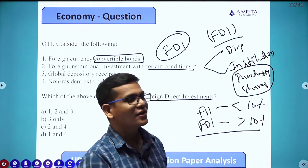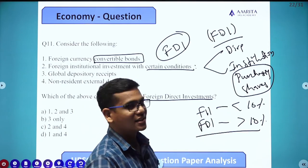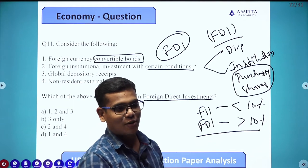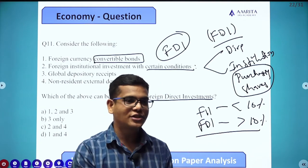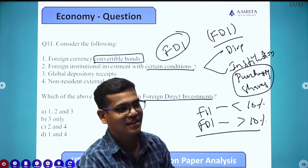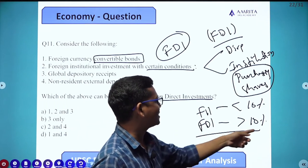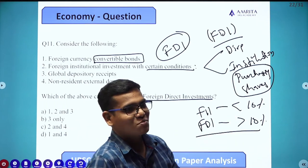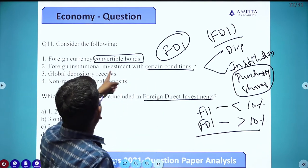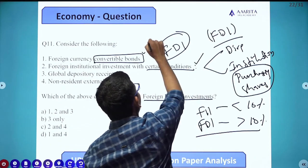This is the definition: for institutional investment, if the purchase is greater than 10% it is FDI; if less than 10% it is FII. When a company is already listed, to infuse capital you can only do it through equities and shares. So FDI can be considered when the purchase is greater than 10%. That means Foreign Institutional Investment with certain conditions can also be considered as FDI.